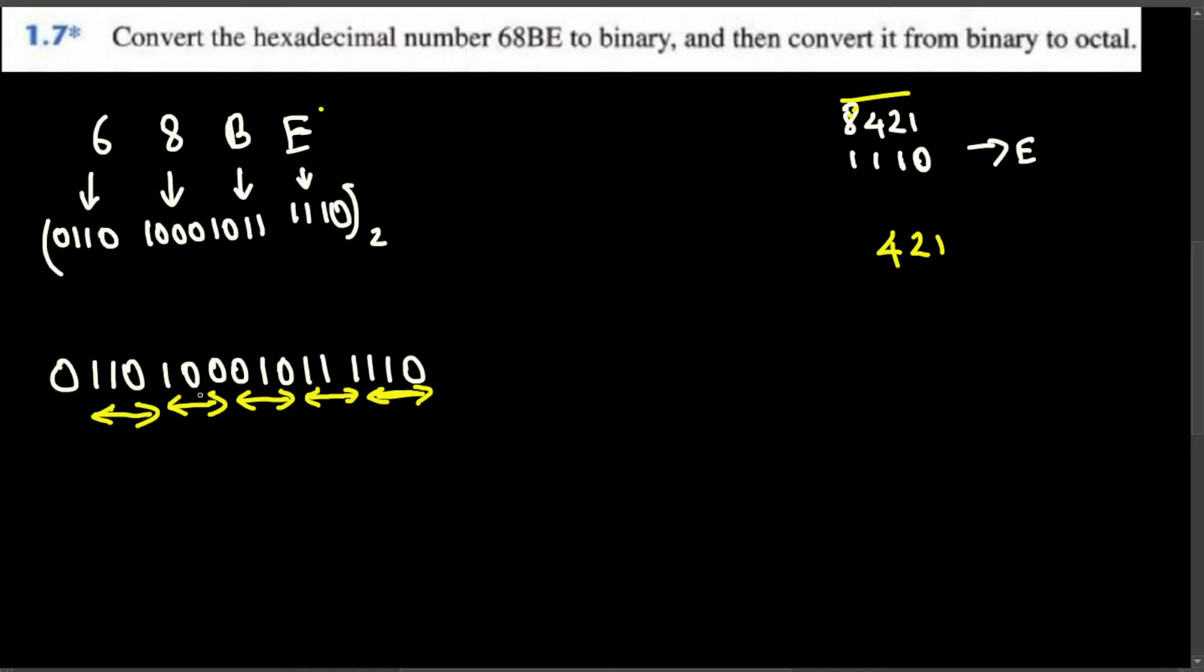But here it's a 0, so we can neglect it. So 110, if you add 110, you're going to get 4 plus 2 equals 6. Like that, you apply 111: 4 plus 2 plus 1 that's 7. And then 010, that is a 2. And then 100, that is a 4. And then 110, that is a 6.